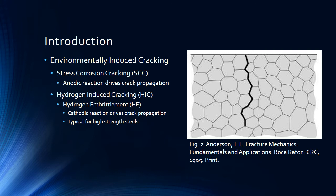Stress corrosion cracking involves an anodic reaction which drives the crack propagation, whereas hydrogen induced cracking, also known as hydrogen embrittlement, involves a cathodic reaction which drives the crack propagation.